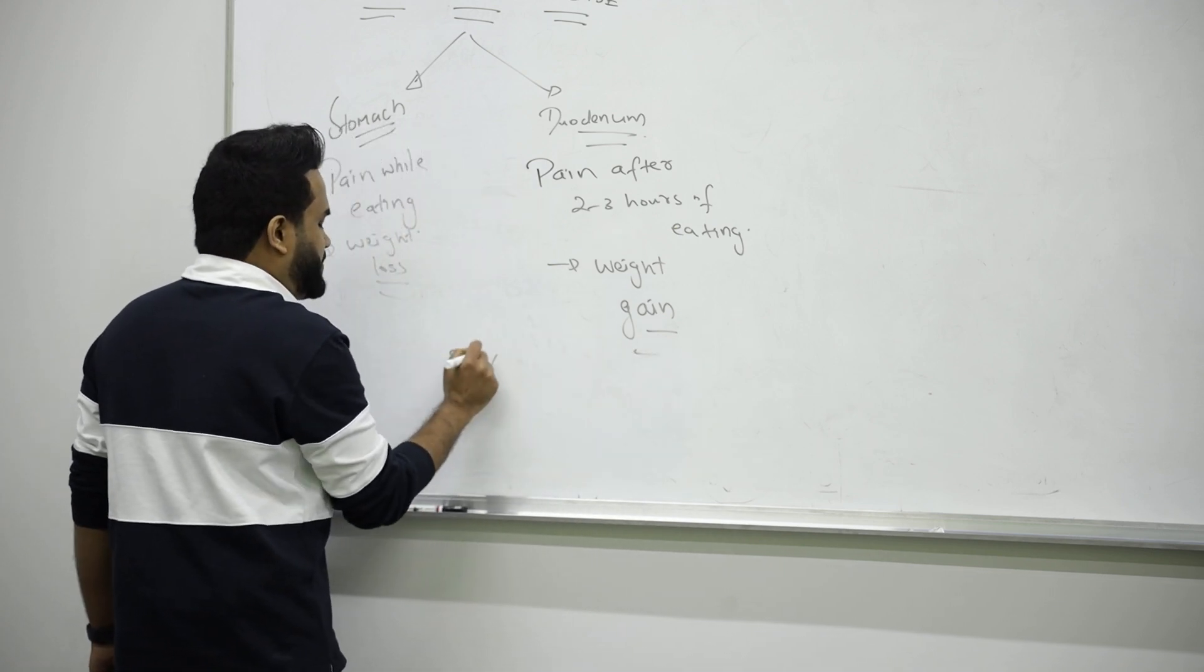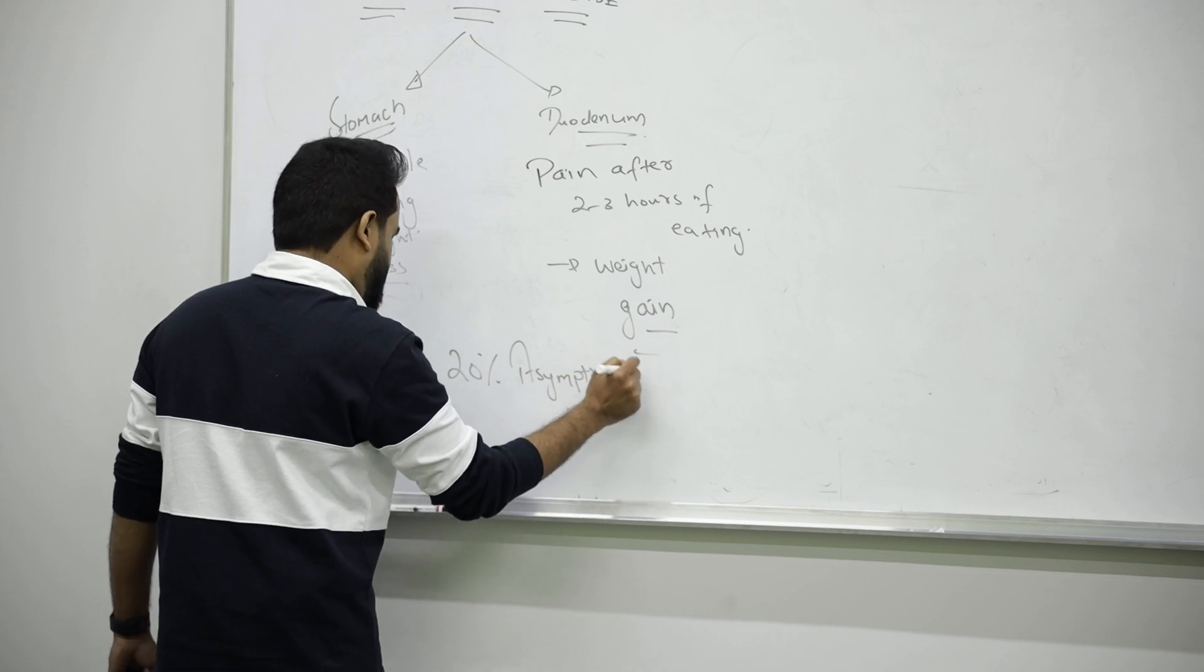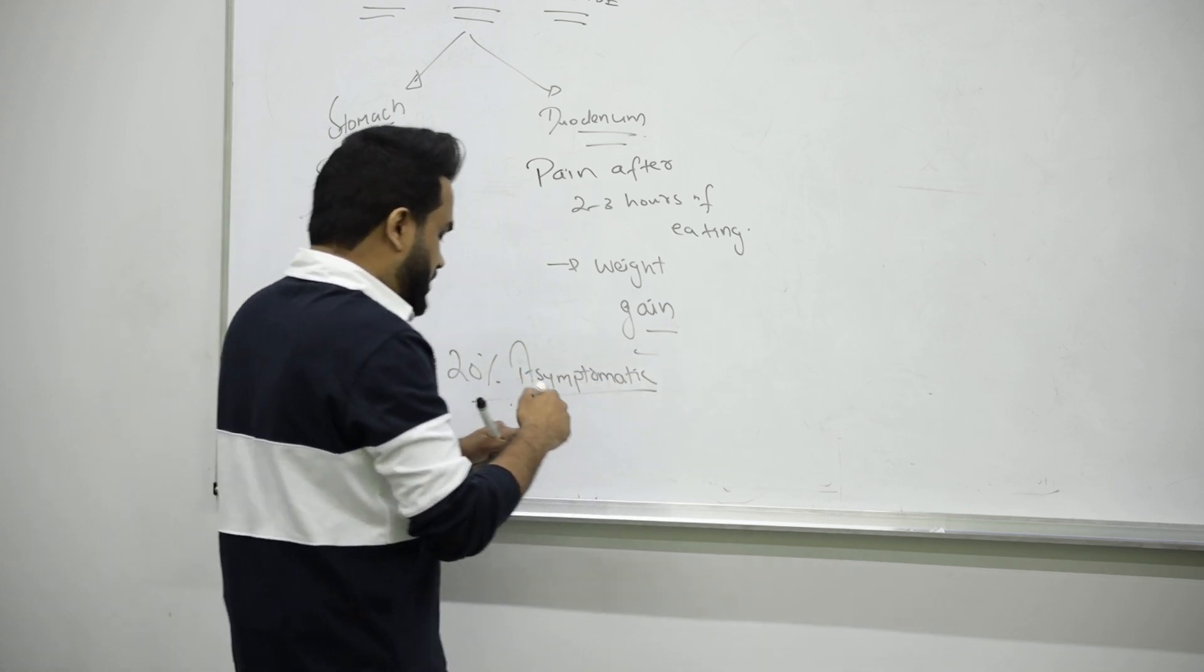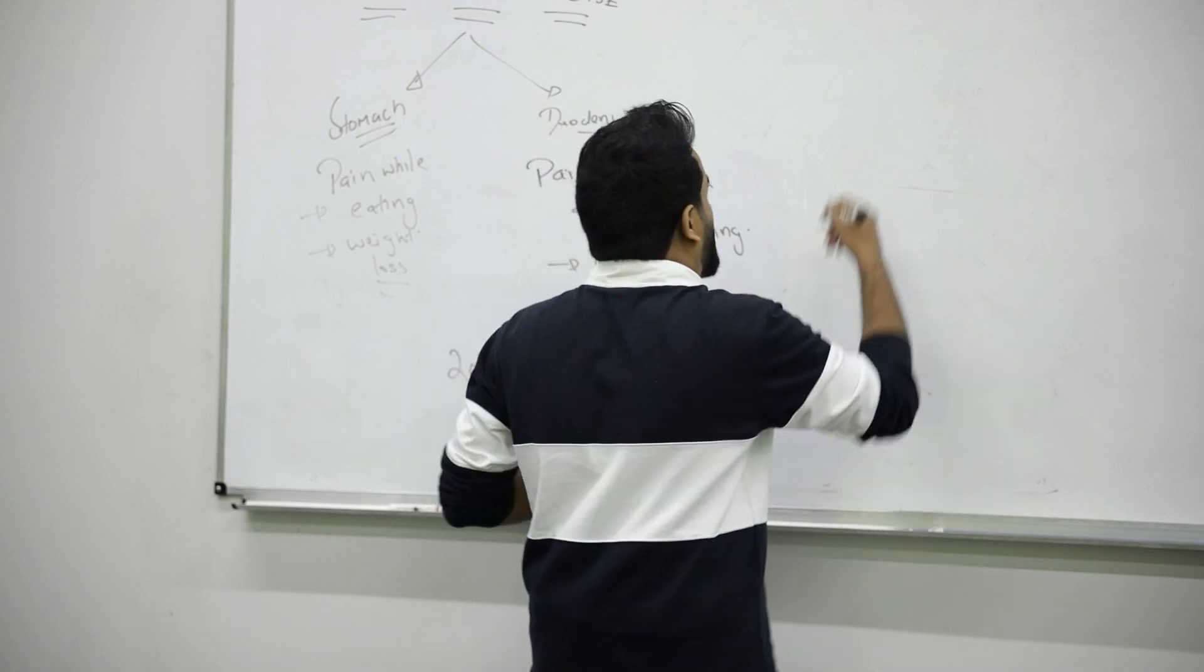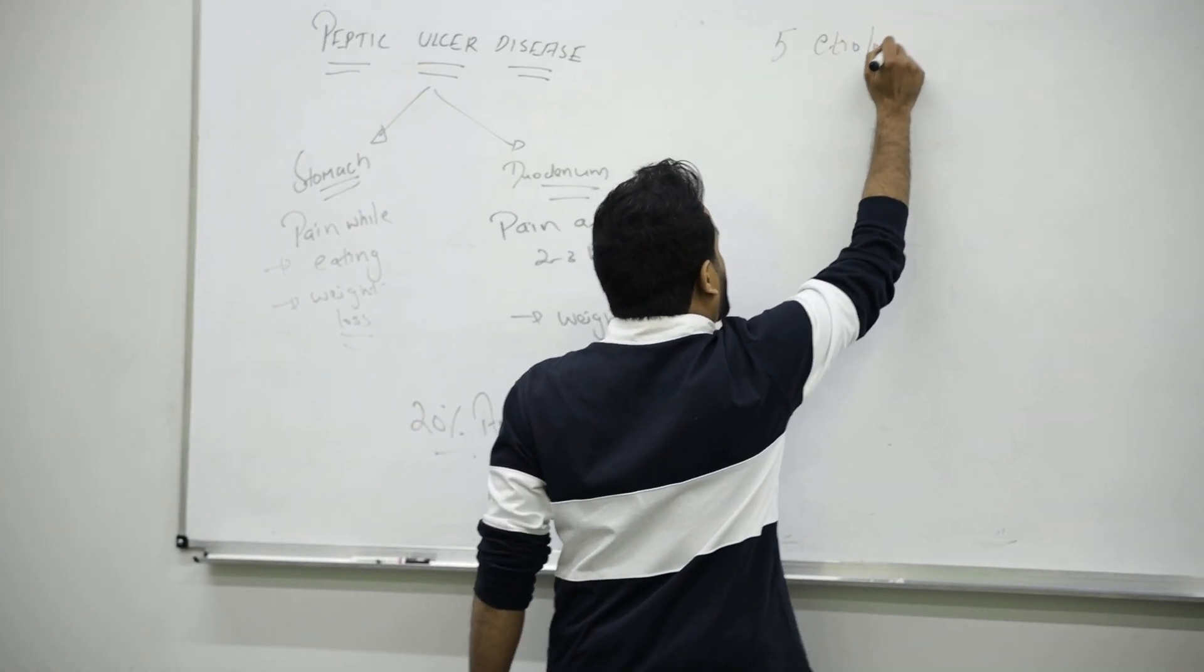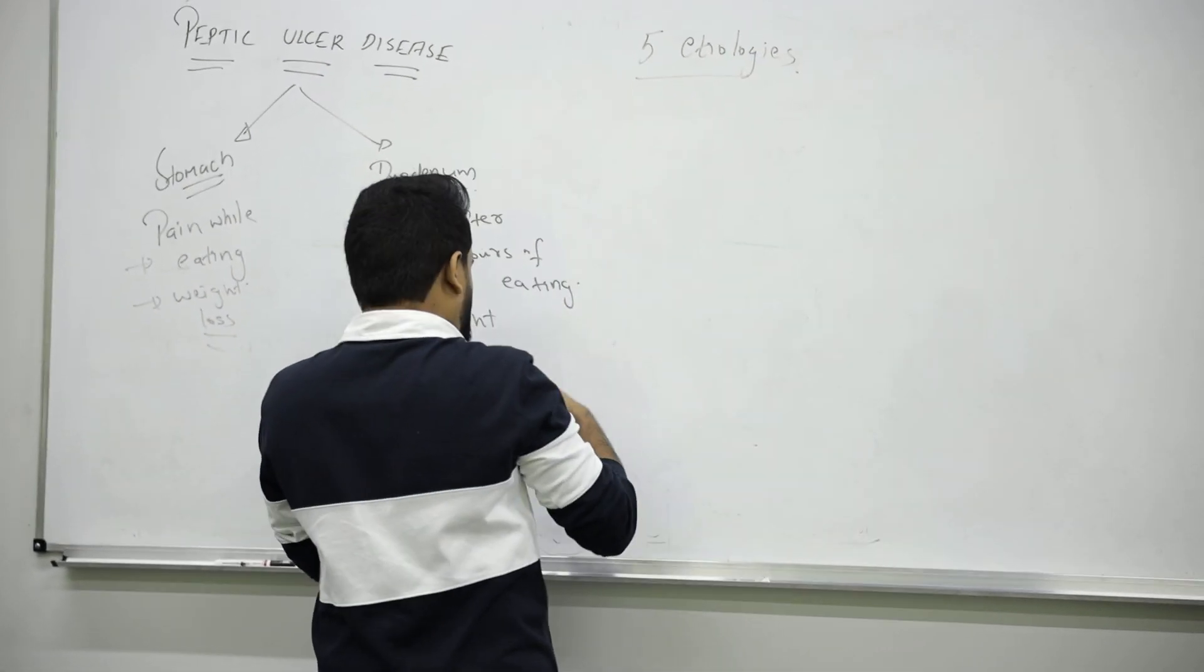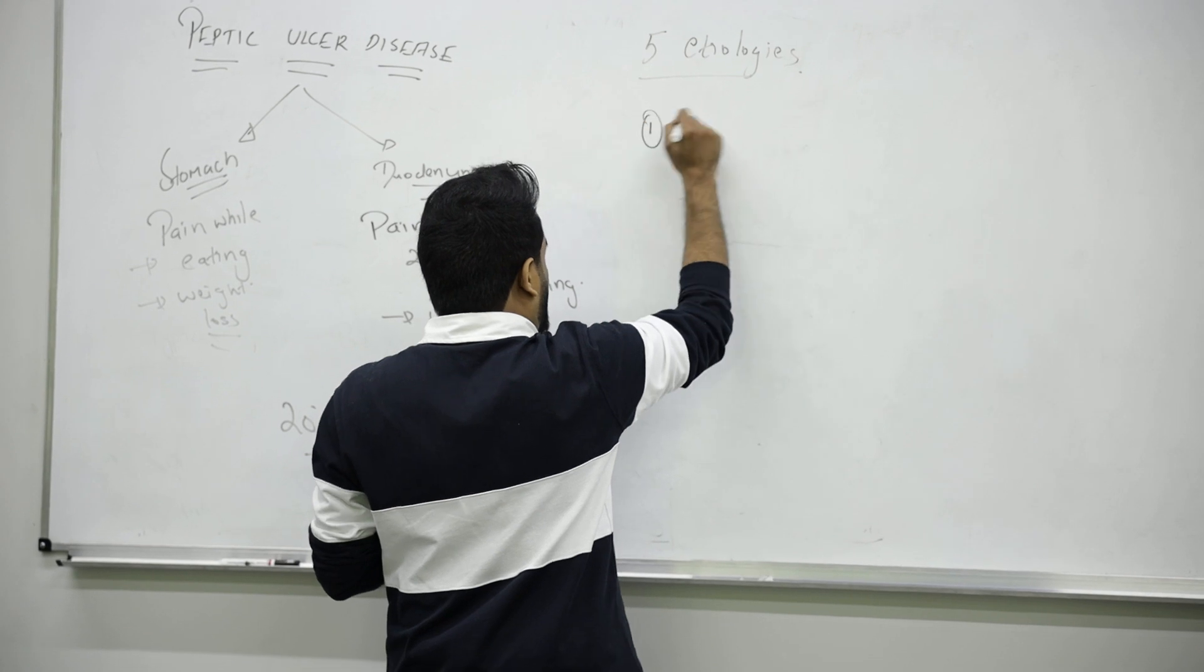Normally in ulcer cases, 20 percent of patients will be asymptomatic. There are five common etiologies behind peptic ulcer disease. First one can be caused by a bacteria called Helicobacter pylori.